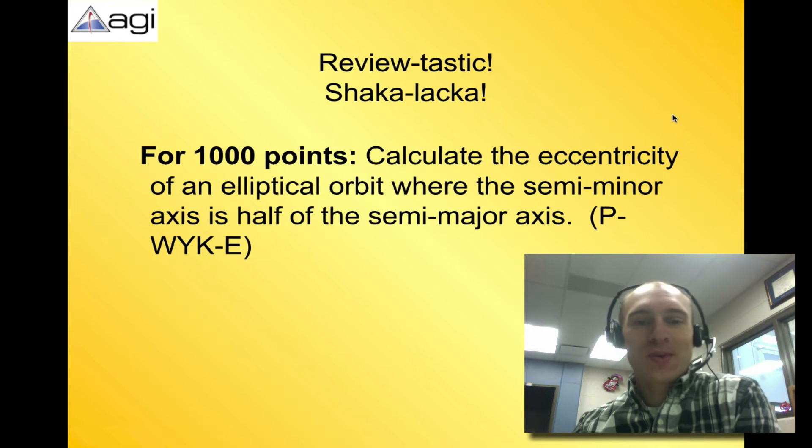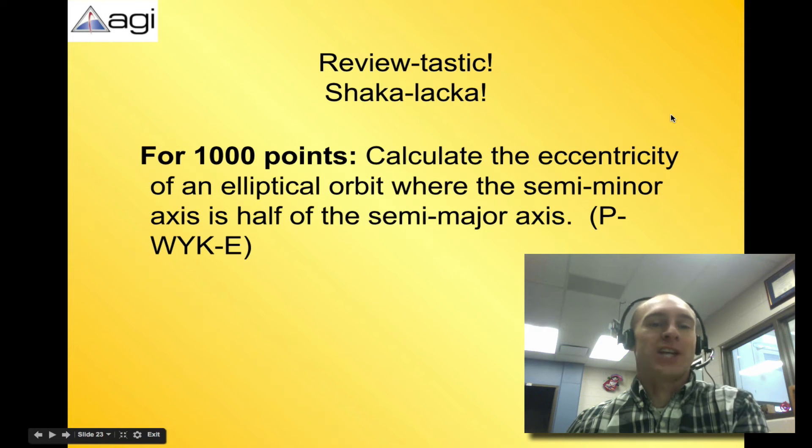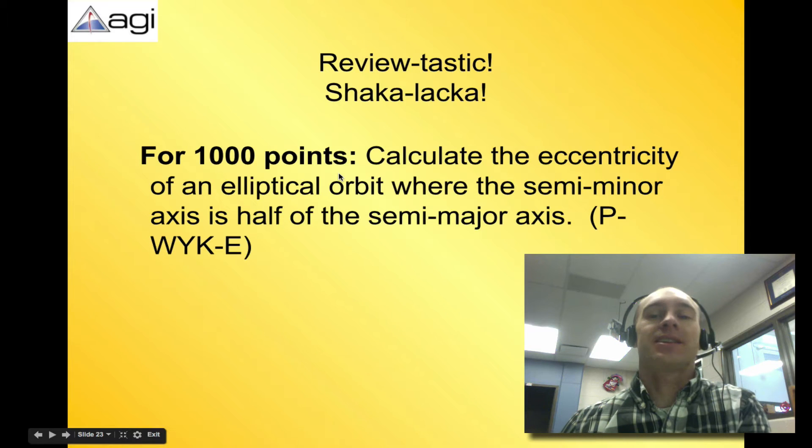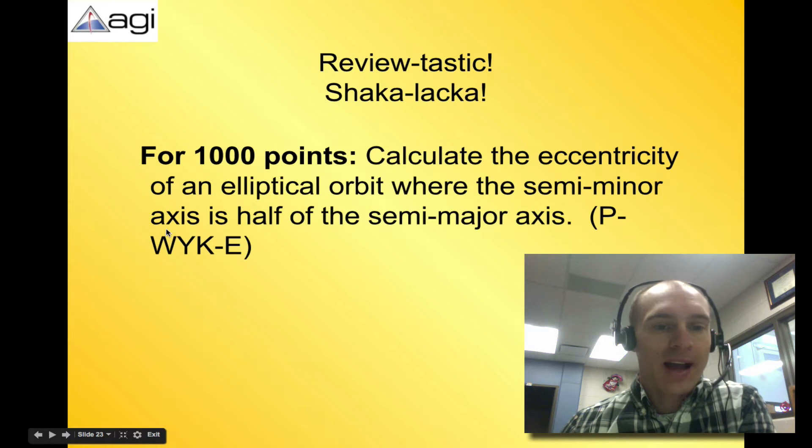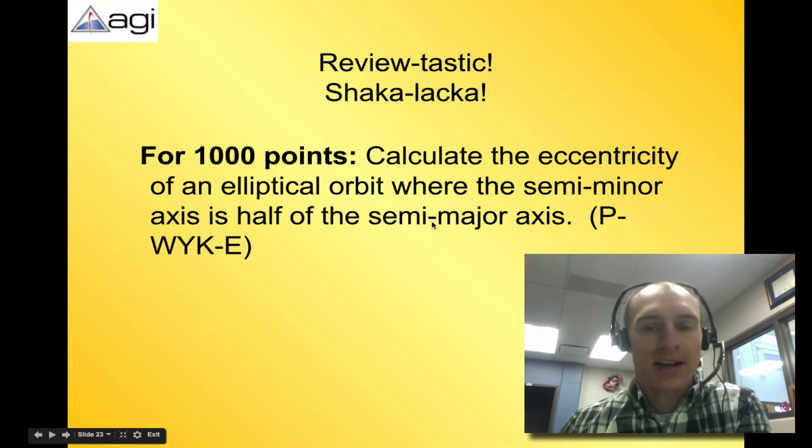All right, let's start out part two with a problem-solving challenge. For a thousand points, calculate the eccentricity of an elliptical orbit where the semi-minor axis is half of the semi-major axis.